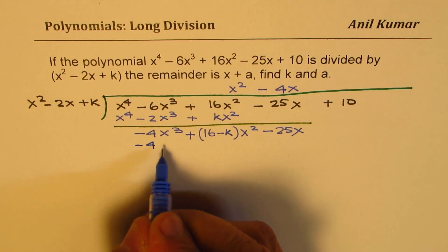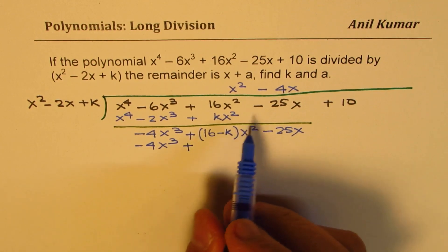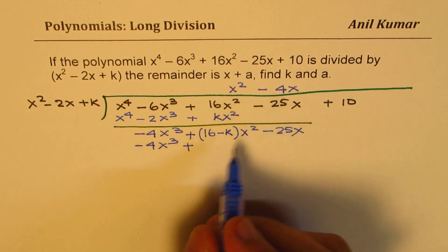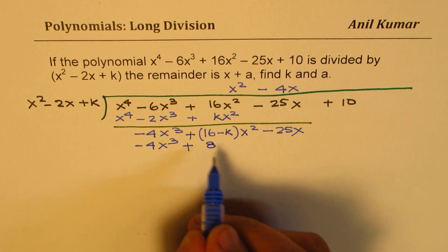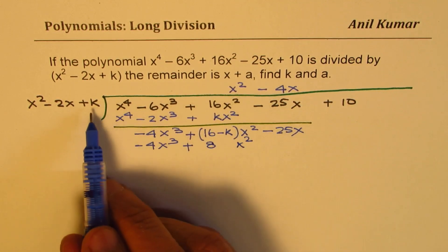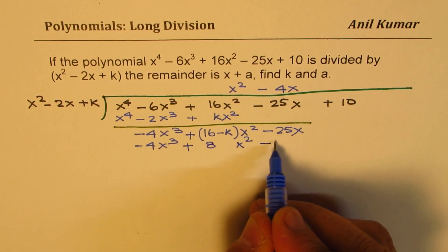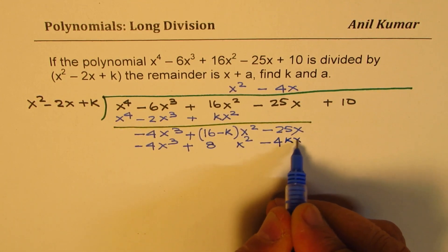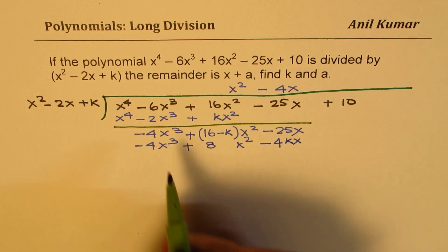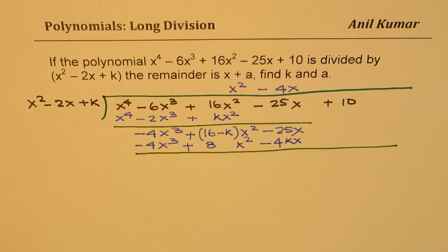So we get -4x^3, minus minus makes it positive. 4 times 2 is 8 so we get positive 8x^2. Now this term becomes -4kx. So when you take away what do you get? It becomes really tricky at this stage.